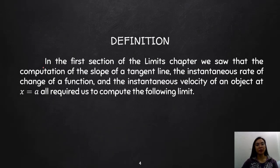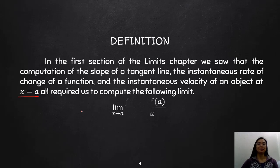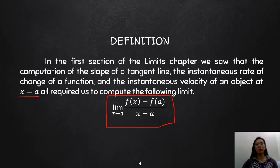Starting with the definition — in the first section of the limits chapter, we saw that the computation of the slope of a tangent line, the instantaneous rate of change of a function, and the instantaneous velocity of the object at x equal to a, all required us to compute the following limit: the limit of f(x) minus f(a), all over x minus a, as x approaches a.